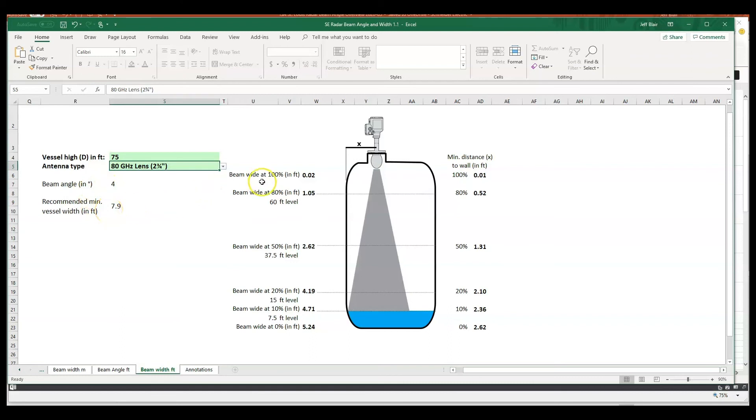So at 75 feet, all the way at the bottom of the tank - if you remember, we had 5.2 here - we could see 5.2 feet. That's how big that beam is going to be at the bottom of the tank.